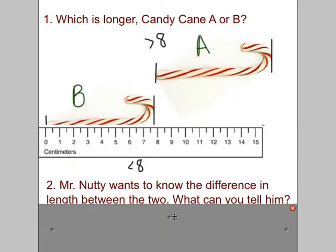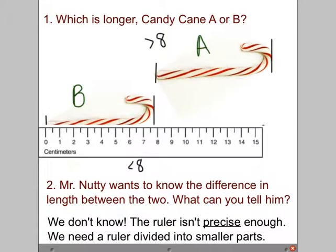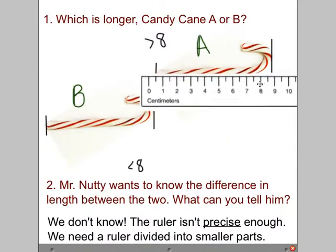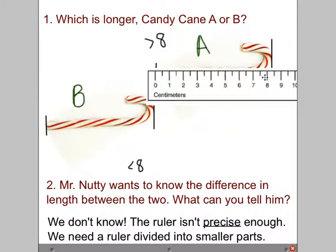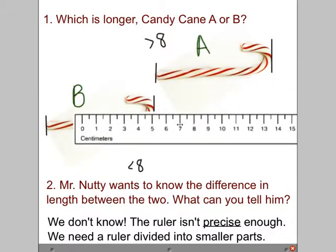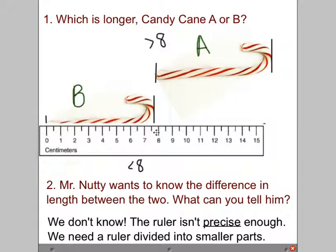So the question. He wants to know the difference in length between the two, so he knows for sure he's getting the longest candy cane. What can you tell him? We don't really know. See, this ruler, the centimeter ruler, is not precise or accurate enough. We need a ruler that's going to be divided into smaller pieces so that we can accurately or precisely get the measurement without having to estimate.